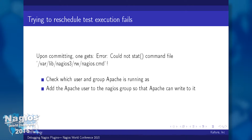I want to make a note that you can also use Apache ITK — that's a different MPM, different from Prefork and the Worker event-threaded one. The nice thing about Apache ITK is that it allows you to run each and every vhost using a different user, which the regular Apache does not. In that case, you could have Apache run a Nagios vhost under the user nagios, and then you wouldn't need any permission workarounds at all. Apache ITK is available in Debian and Ubuntu by default. For RHEL, CentOS, and RPM-based systems, you'll have to compile it.